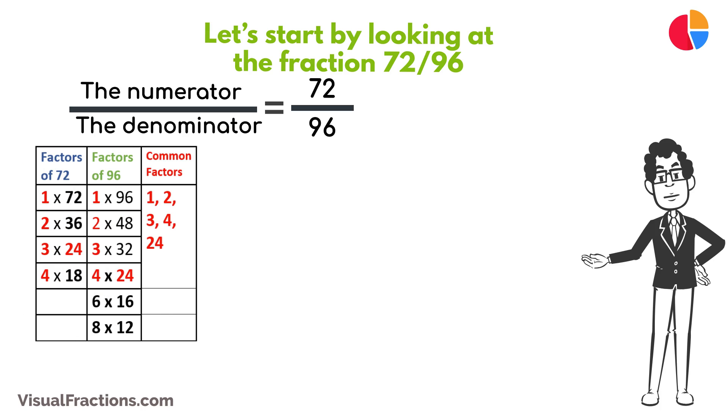The greatest common factor, or GCF, for 72 and 96 is 24.